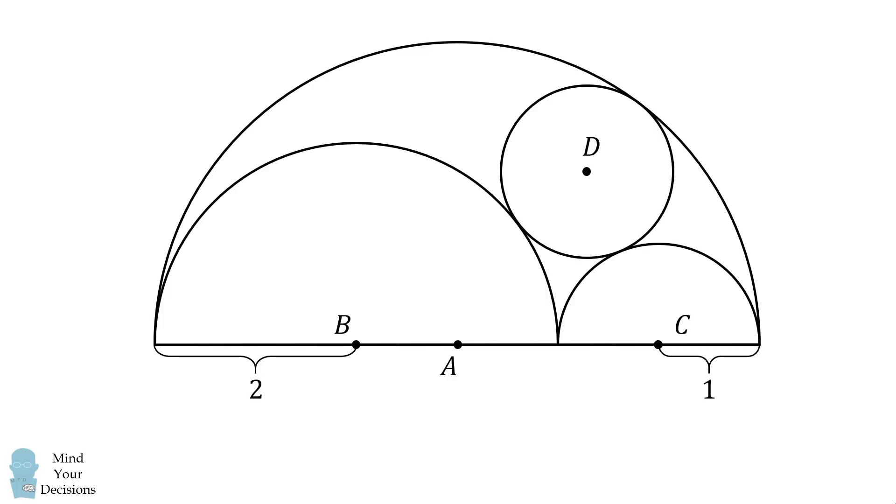Returning to the original problem, we'll calculate the radius of circle A. Recall that circle B has a radius of 2, and circle C has a radius of 1. Therefore, circle A has a diameter equal to 6, and a radius that's equal to 3. This means AB has a length of 1, and AC has a length of 2.